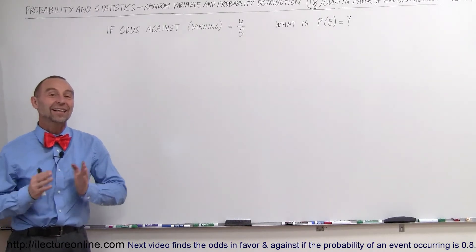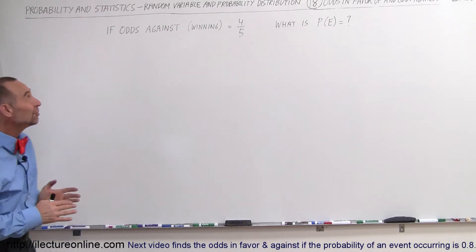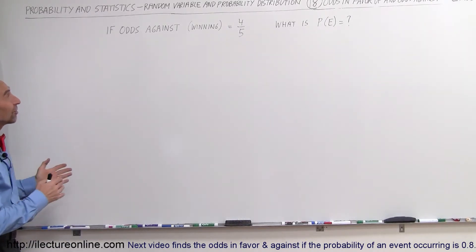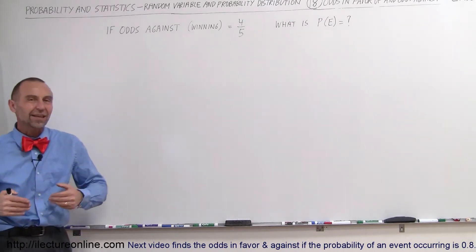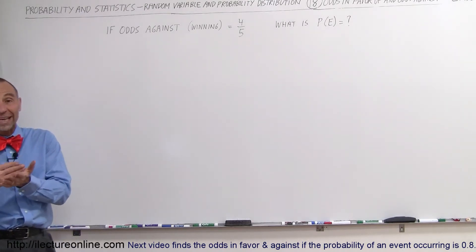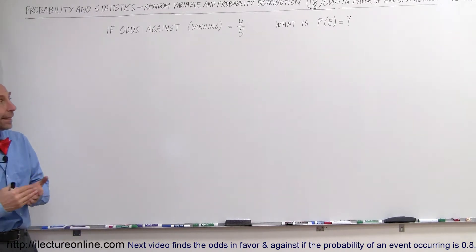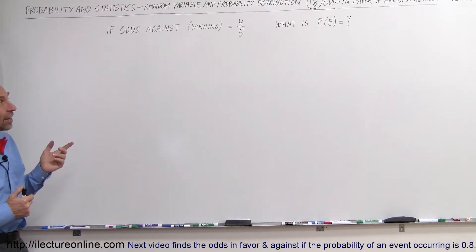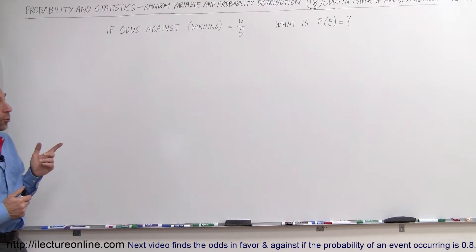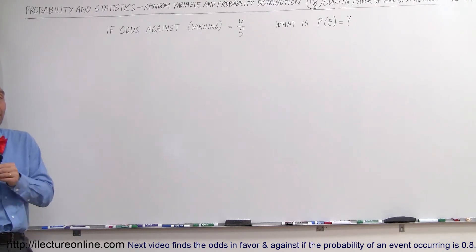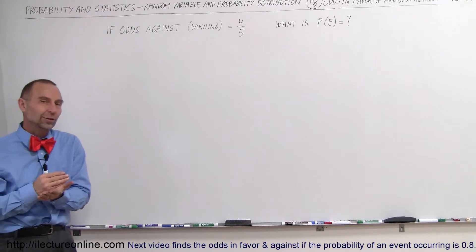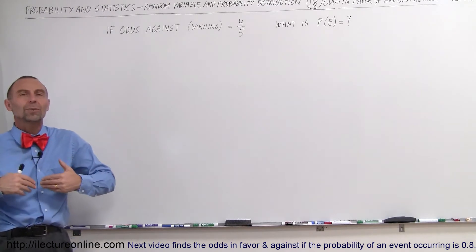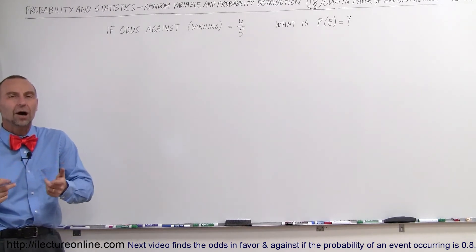Welcome to ElectronLine. Let's say that they give you the odds against to be four-fifths. When they say the odds against, they really mean the odds against winning. In this case, they want to know what is the probability of the event occurring — that is, what is the probability of winning.